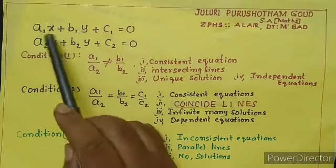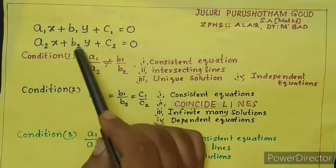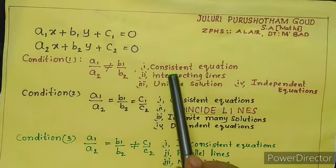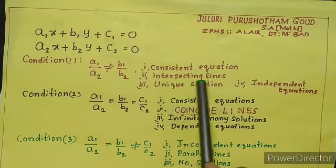Children, here condition 1 is: if this a1 by a2 is not equal to b1 by b2, then we have to say they are called the consistent equations. Consistent equations means we get the answer.